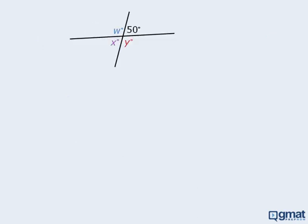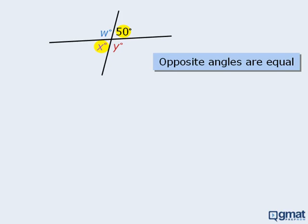Now let's take the properties we have learned so far and use them to find the measurements of angles w, x, and y. Let's begin with angle x. Notice that these two angles are opposite. Since opposite angles must be equal, we know that x must equal 50.